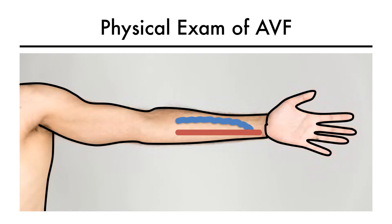Let's learn about the key points related to physical examination of a fistula. Shown in this cartoon is a radiocephalic AV fistula between the radial artery, marked in red, and the cephalic vein, marked in blue. The yellow arrows denote the direction of blood through the fistula, and black arrows point to the site of anastomosis.